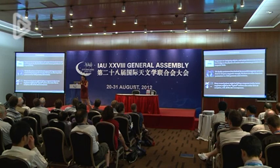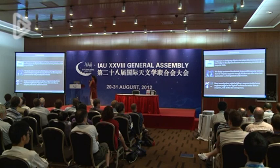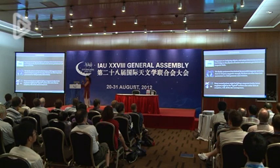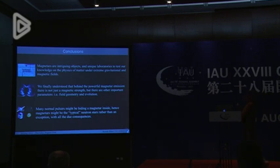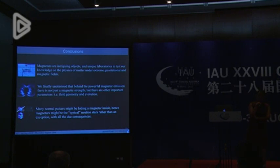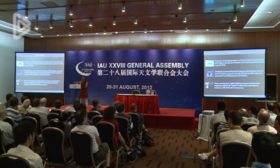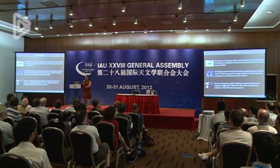Just to conclude, I hope I've convinced you of three main things: first, that magnetars are very intriguing objects and perfect, unique laboratories to study what happens to plasma and matter under very extreme conditions; second, that it is not just a matter of the strength of the magnetic field — geometry and its evolution play a very strong role — and also that many normal pulsars might actually be hiding magnetars inside and can burst at any time; we just have to wait.